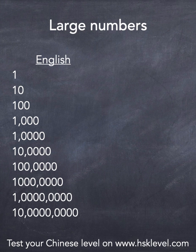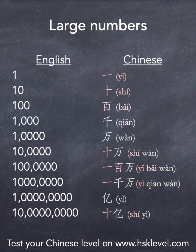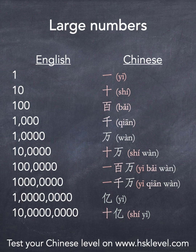In Chinese, because we group the digits by groups of four, there is a word for one, ten, one hundred, one thousand, and also a special word for ten thousand. One is yī, ten is shí, one hundred is bǎi, one thousand is qiān, and ten thousand is wàn. One hundred thousand is ten ten-thousands, so it is shí wàn.